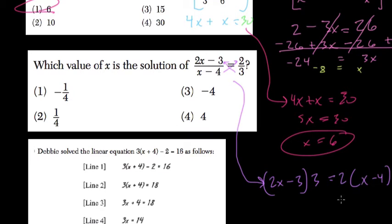2 times x minus 4: 2 times x is 2x, 2 times negative 4 is negative 8. And that equals 2x times 3, which is 6x, minus 3 times 3, which is minus 9.